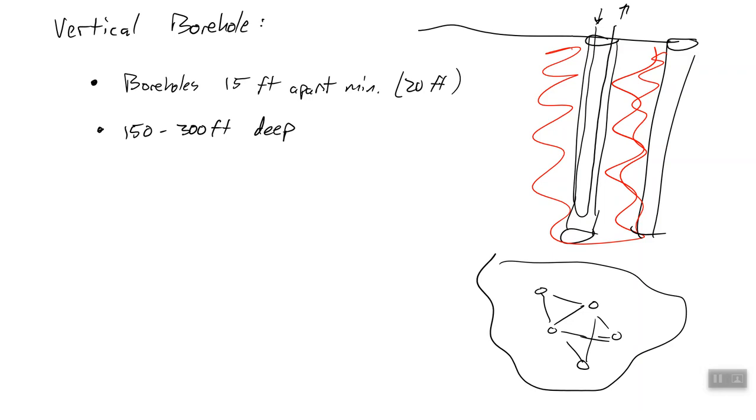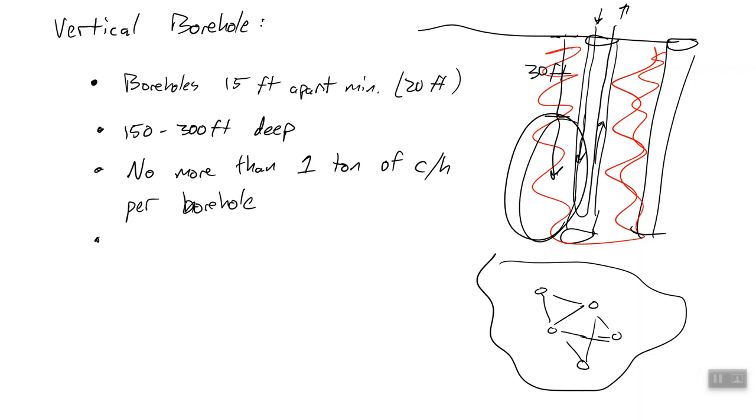As heat leaves a borehole, it's going to heat up the ground immediately around it, or cool the ground, depending on what mode you're in. If you have another borehole right next to it, that impacts the ability of that borehole to transfer heat as effectively. Your boreholes, you want to be 150 to 300 feet deep. About 30 feet into the ground, we see variation in temperature, but below 30 feet, the temperature is essentially the mean temperature of the air in your region. We also want no more than one ton of cooling or heating per borehole.